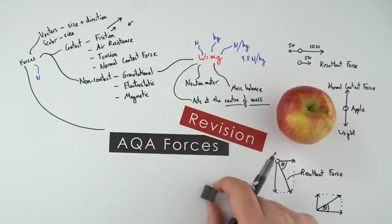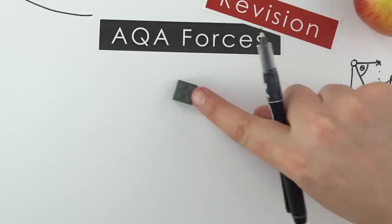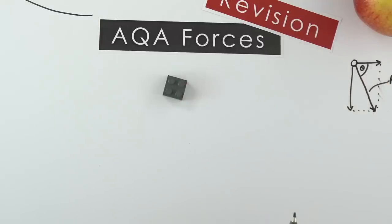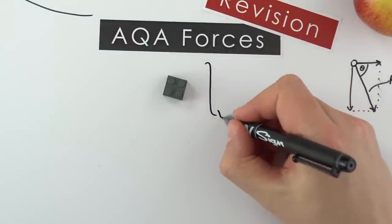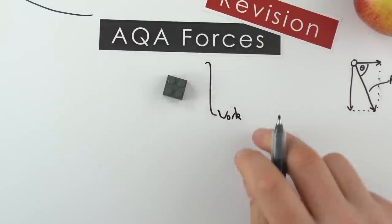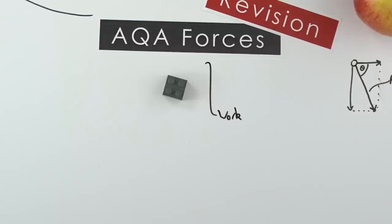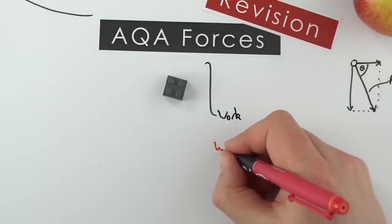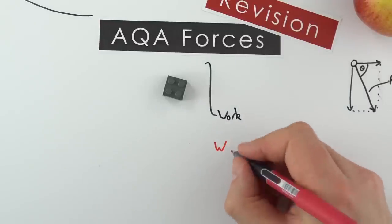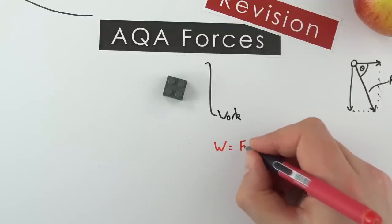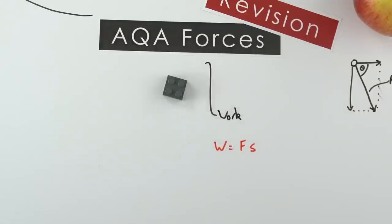If we apply a force to an object over a certain distance, we're doing work. Work done (W) is equal to the force applied multiplied by the distance travelled. So for moving a Lego block, we need to think about how far it's travelled in the direction of the force and the size of the force.